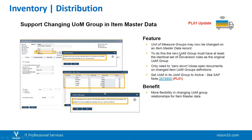Secondly, it now supports changing the unit of measure group in the item master data. The unit of measure groups may now be changed on an item master data record. To do this, the new unit of measure group must have at least the identical set of conversion rules as the original unit of measure group. Only need to zero down and close open documents on changed unit of measure group definitions, and set the unit of measure in its unit of measure group to active. This gives more flexibility in changing the unit of measure group and relationships for item master data.